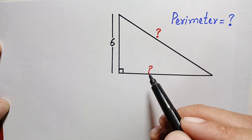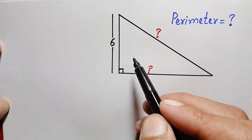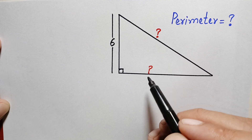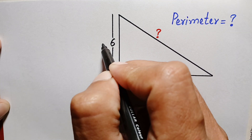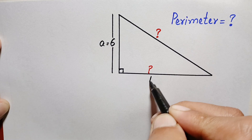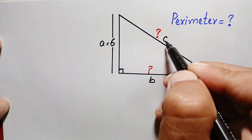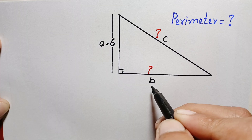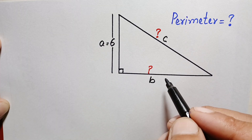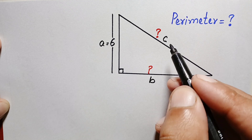Remember that if we change this value there are infinite solutions for this problem. To find the other two sides, let us suppose this is side a — the height is equal to a — this is side b, and this is side c of the triangle. We will try to find the value of b and c. Since this is a right angle triangle, we can apply the Pythagorean theorem.